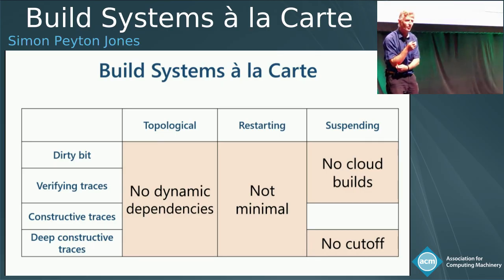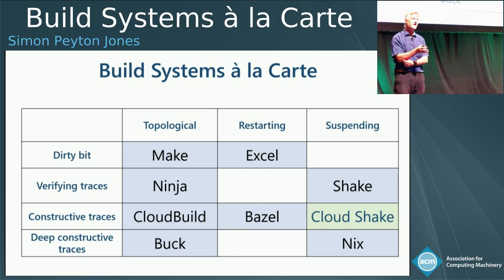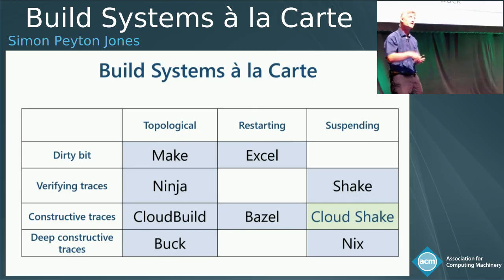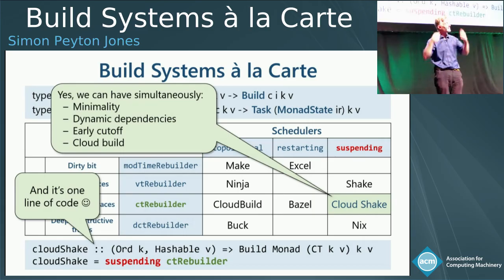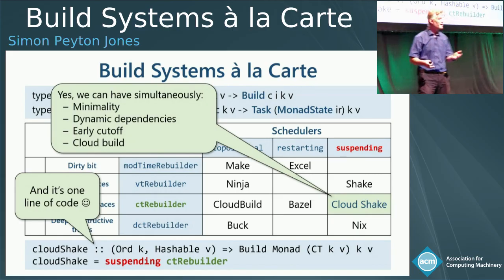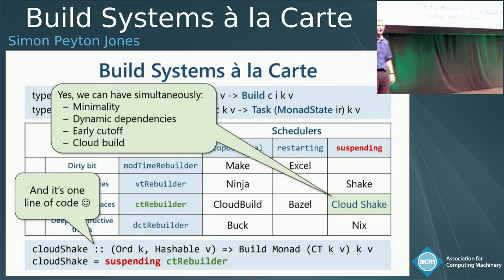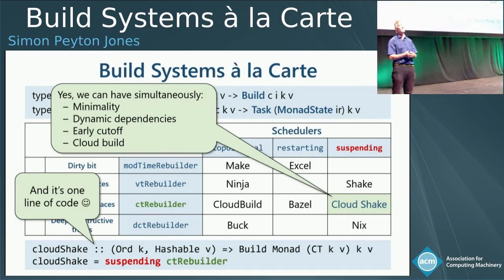There's a suggestive hole in this. And indeed, here it is — a hole that was initially empty because it has a good combination of properties: you get cloud build, early cutoff, and dynamic dependencies. That combination was intellectually hard to hold in your head at one time, so nobody built it. But having done this analysis, we found we could build it in one line with four fixings on it. This is effectively Cloud Shake — it gives you all of these very nice properties together.